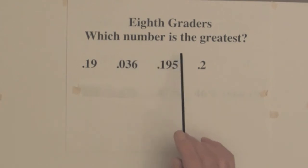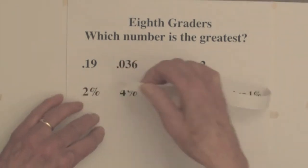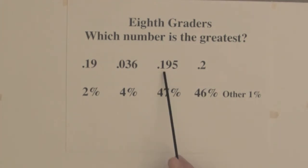Which of these numbers is the greatest? A two place decimal, two three place decimals, and a one place decimal. Let's check the results. Forty-seven percent thought that 0.195 was the greatest number. Now we know that 0.2 is the greatest number because two is the largest digit in the tenths place. Now possibly 0.195 was popular because 195 is greater than two.